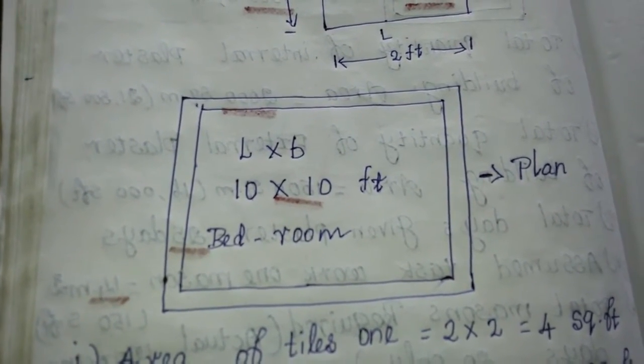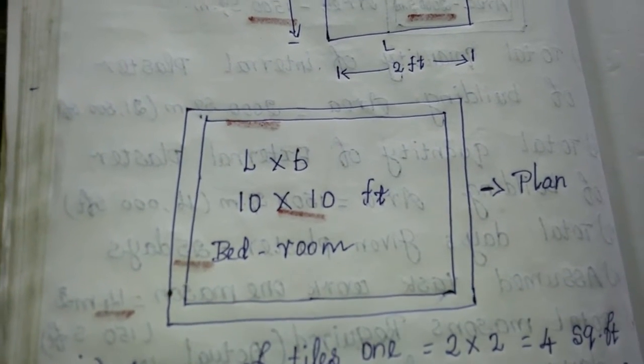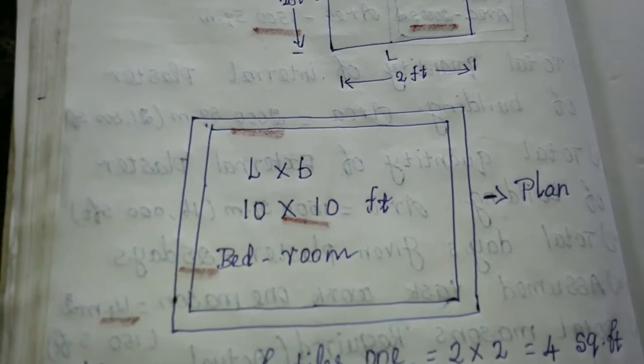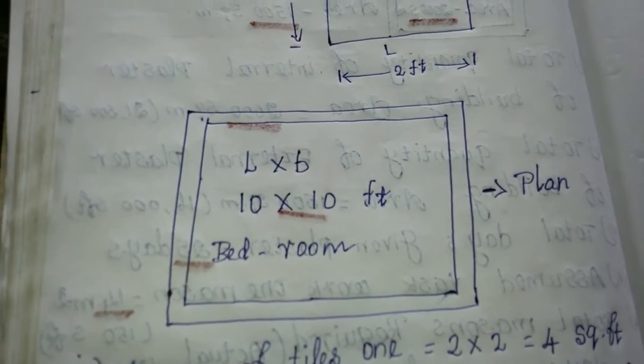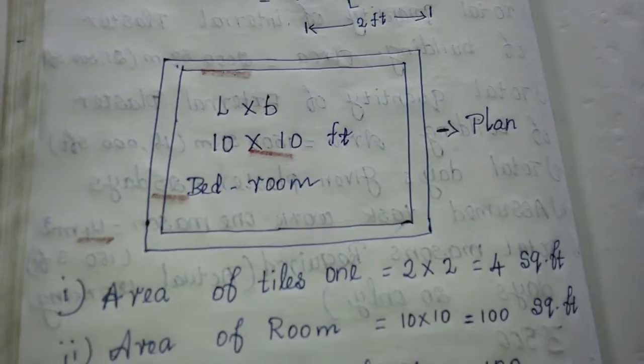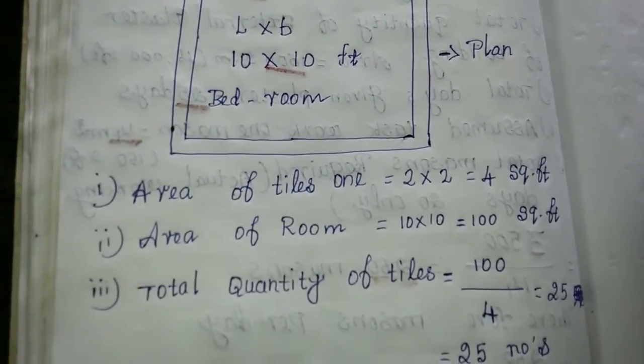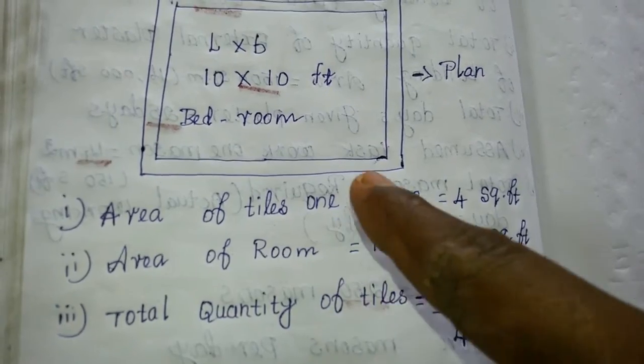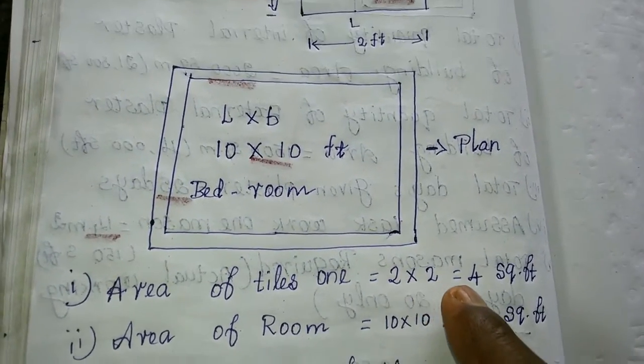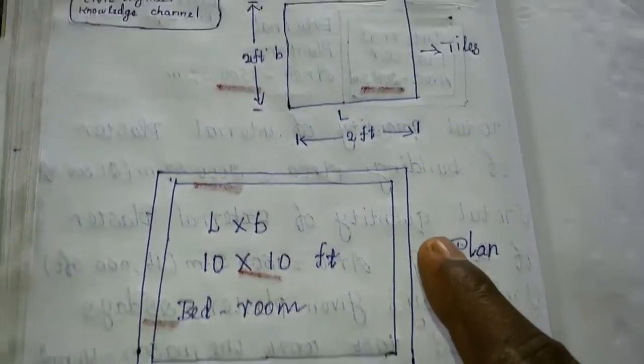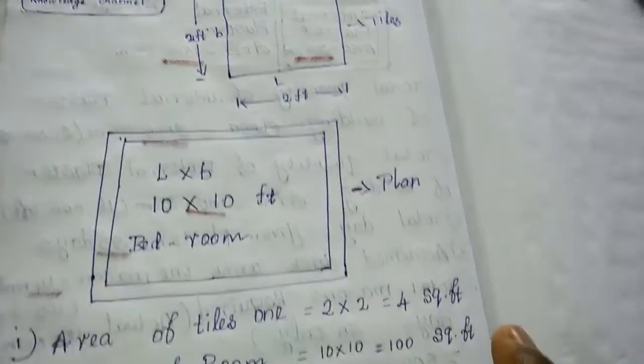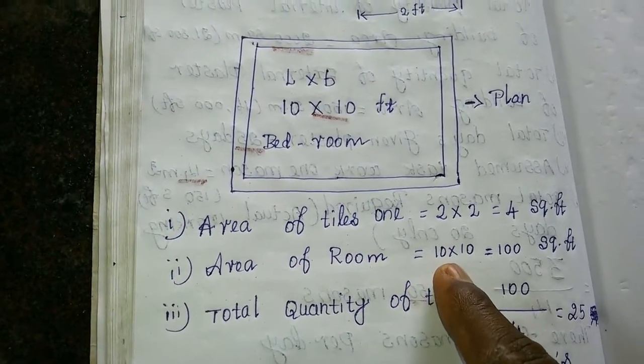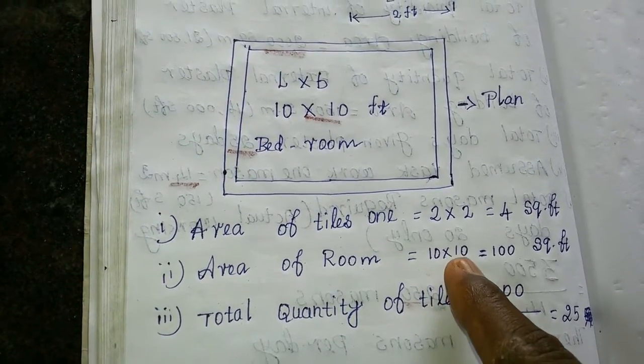This is Length 10ft and Birth 10ft. So 4 square feet area of tiles. Area of room: 10 feet into 10 feet, so 10 feet into 10 feet equals 100 square feet.